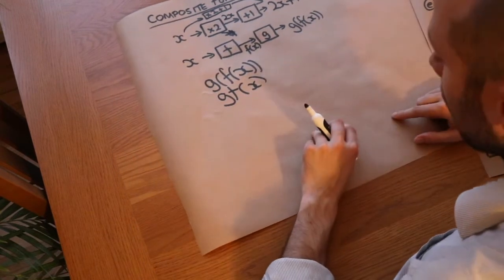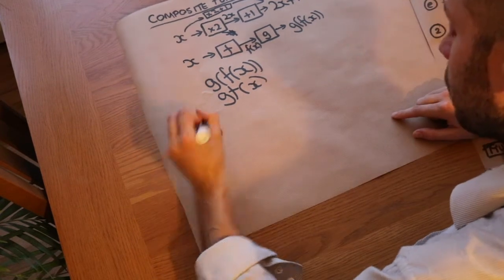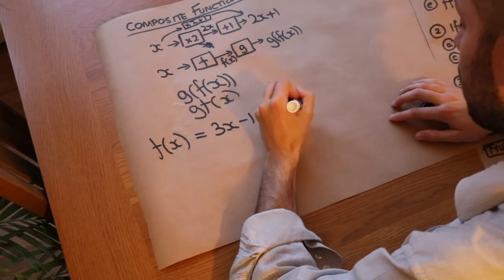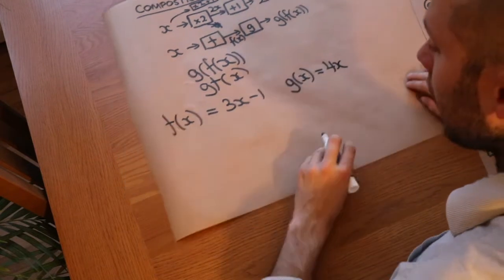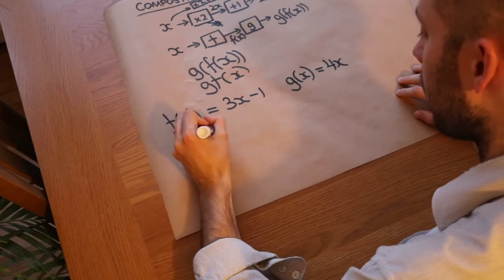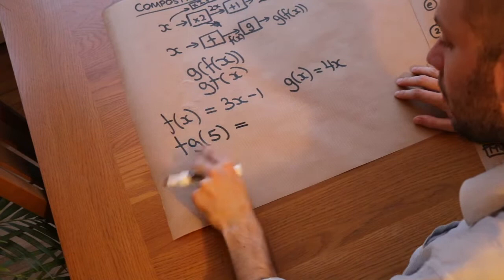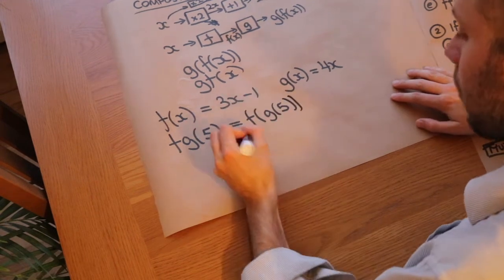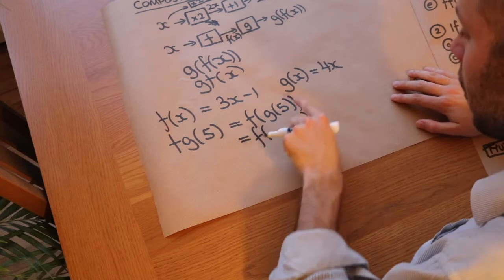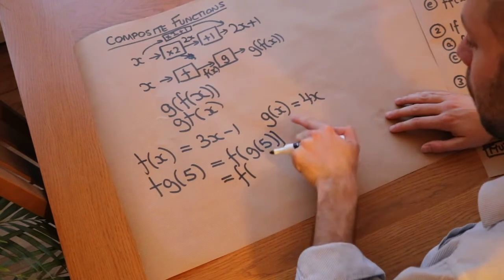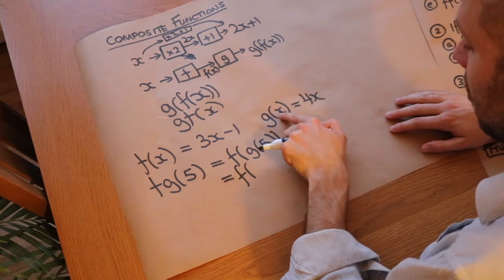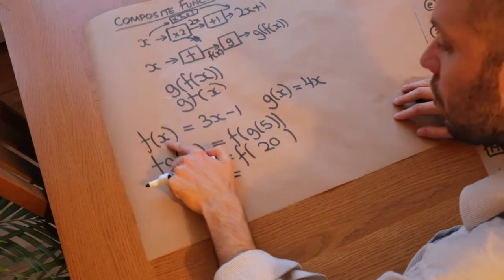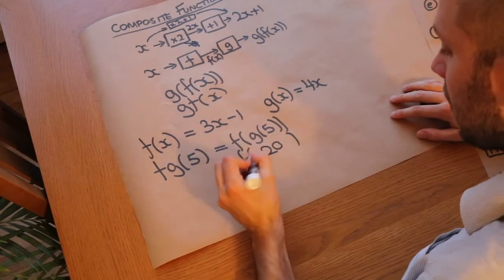Let's do a quick example. Say f(x) = 3x − 1 and g(x) = 4x. What is f(g(5))? We first work out g(5): that's 4 times 5, which is 20. Then we do f(20): that's 3 times 20 minus 1, which is 59.